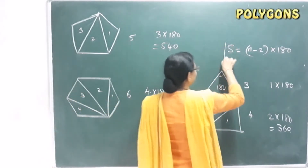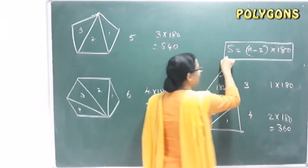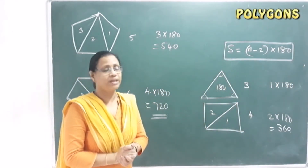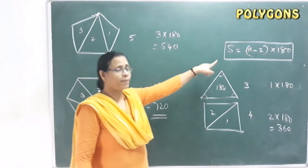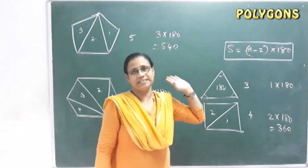So for any polygon, the sum of interior angles follows the formula S = (N − 2) × 180 degrees.